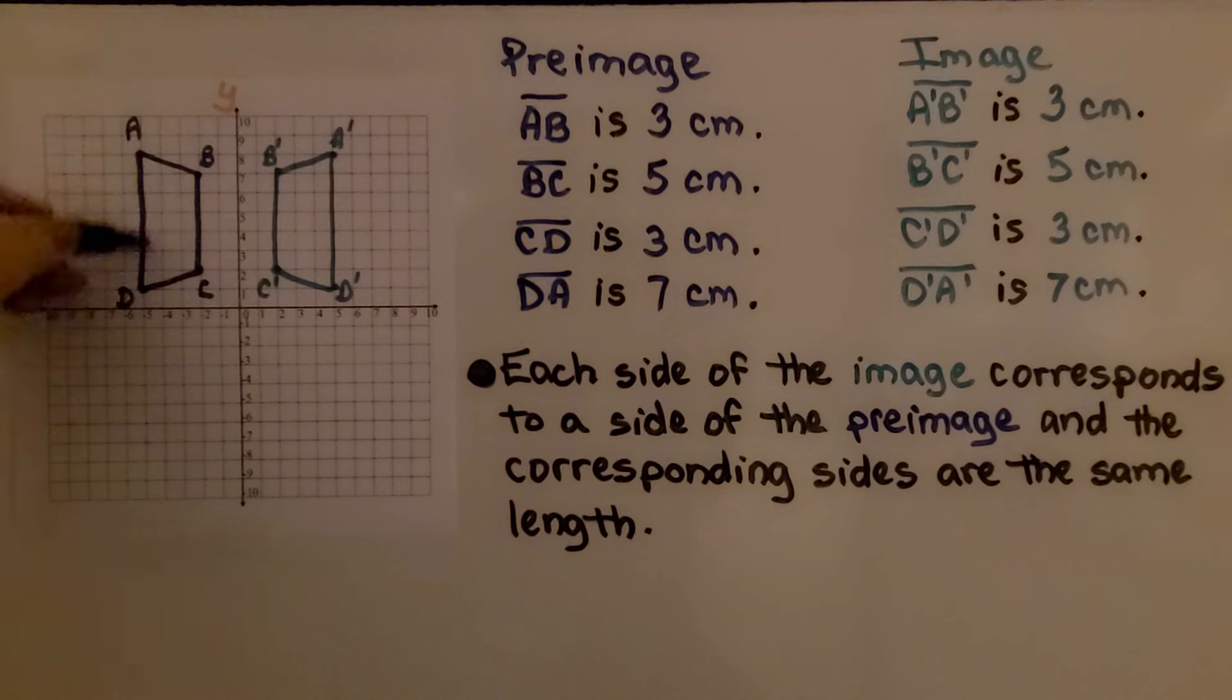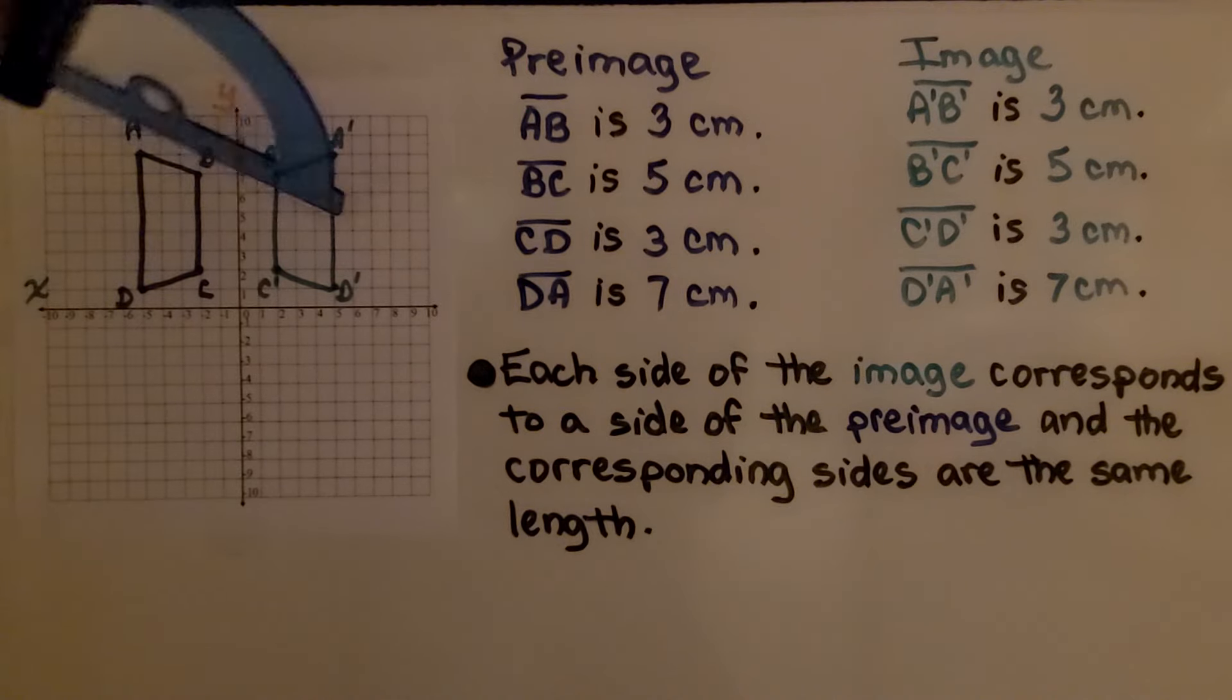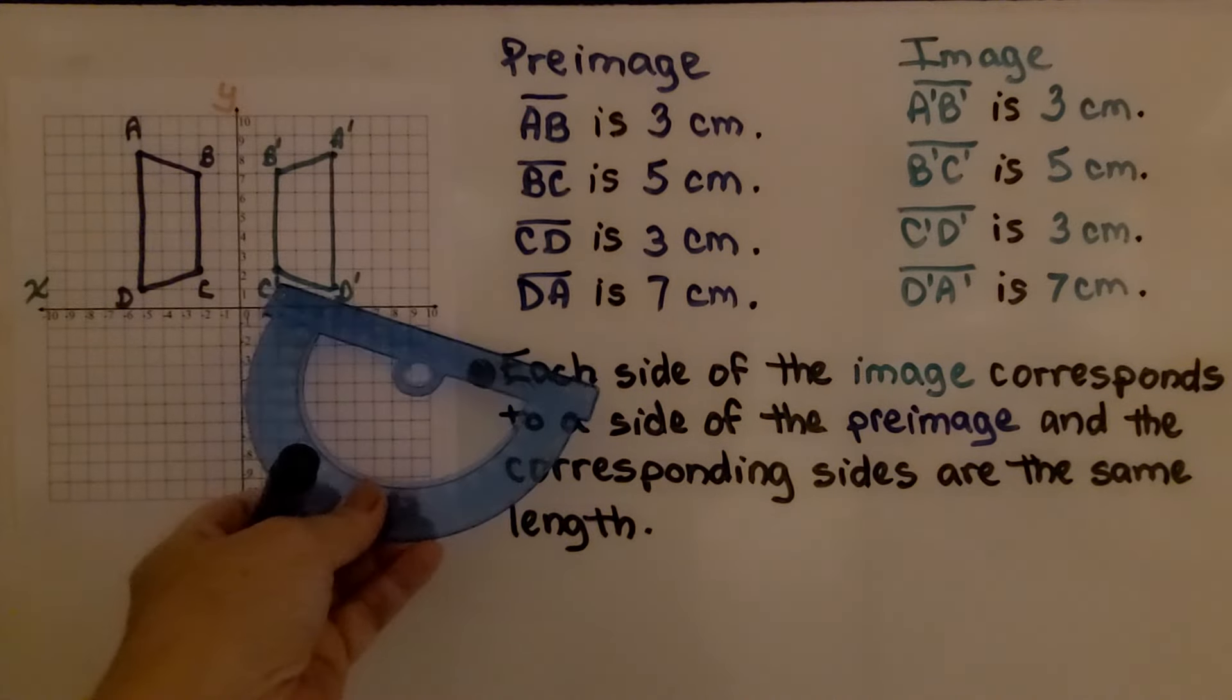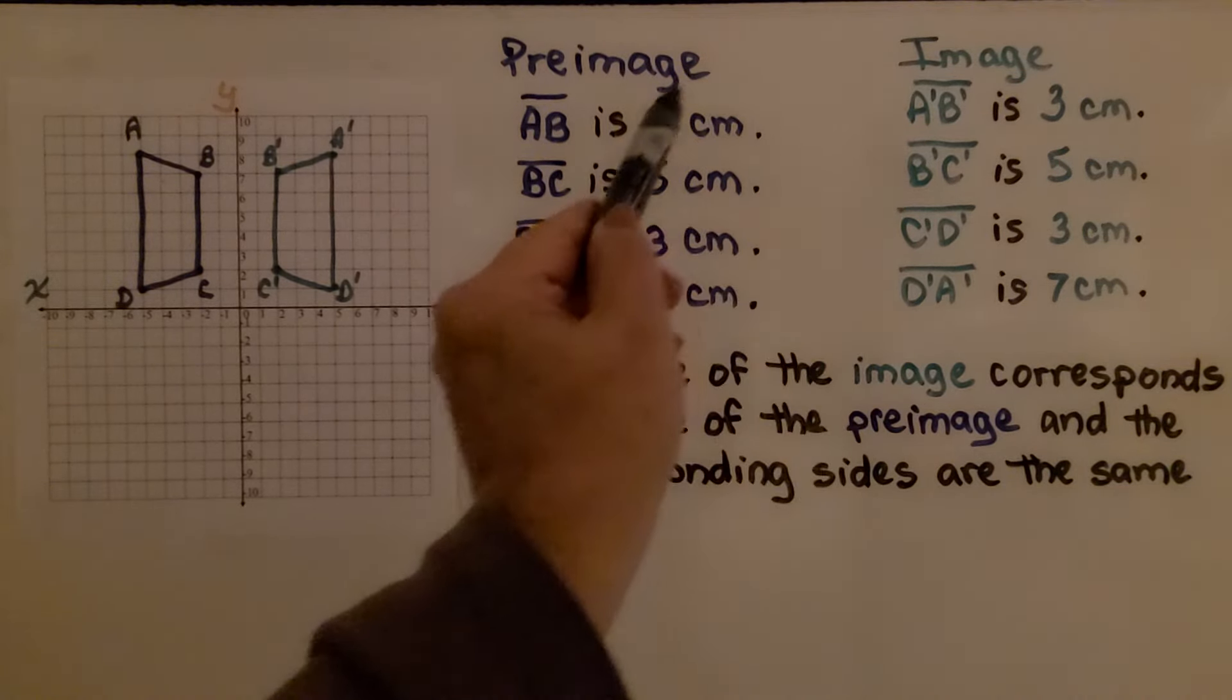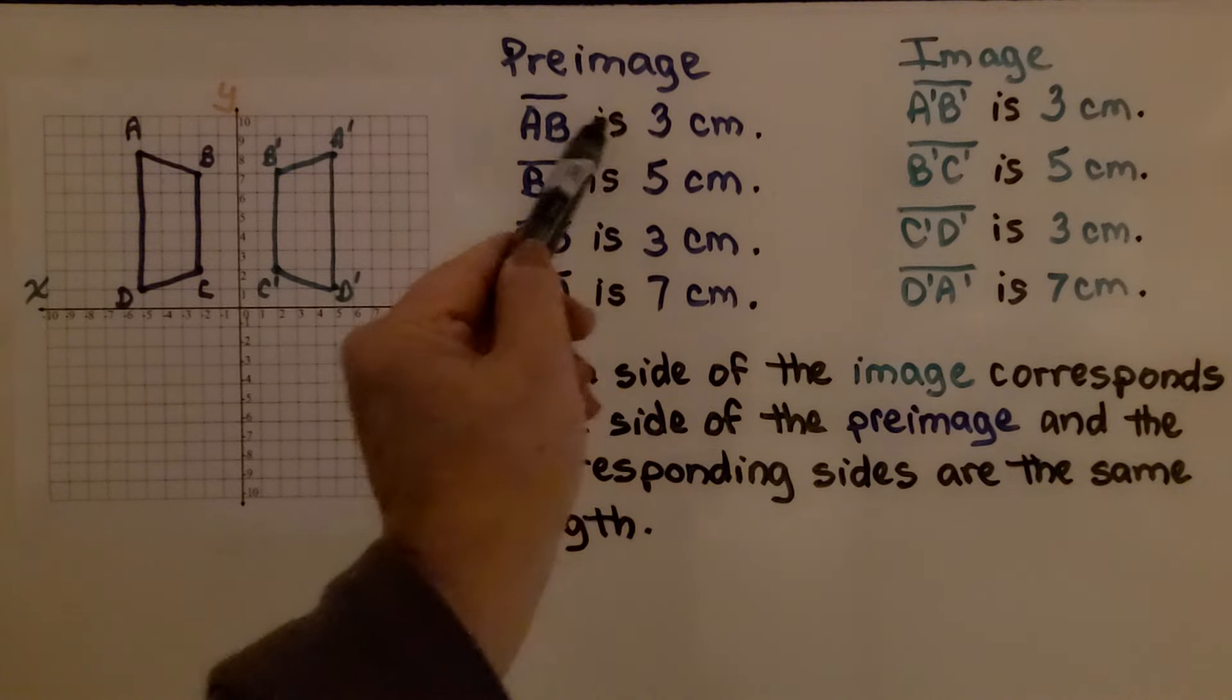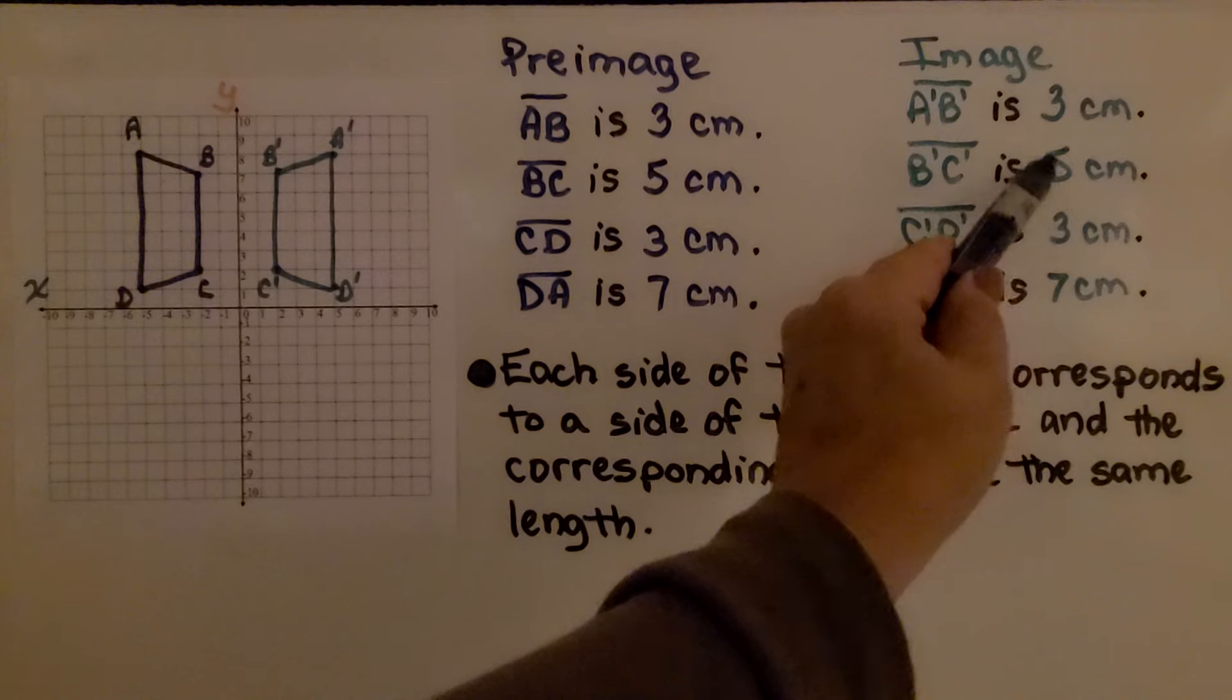and DA is 7 centimeters. When I measure the sides of the image with my straight edge part of my protractor or a ruler, I find that line segment A'B' is 3 centimeters, just like the pre-image AB. And B'C' is 5 centimeters,